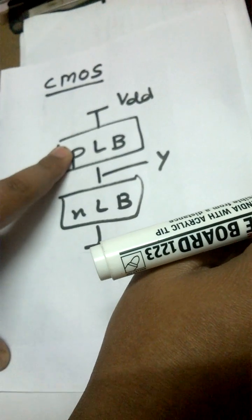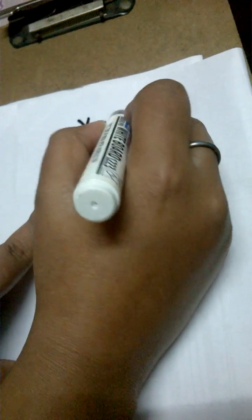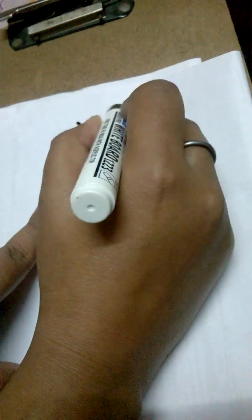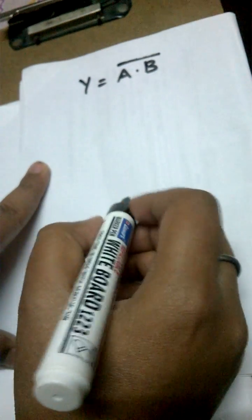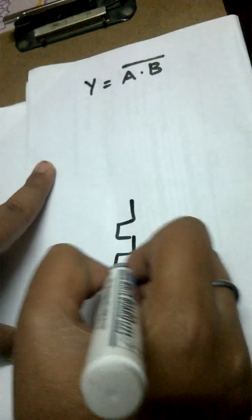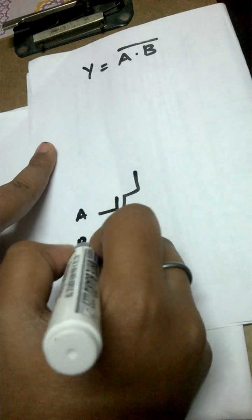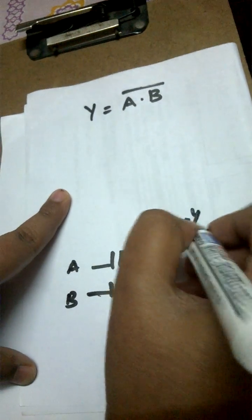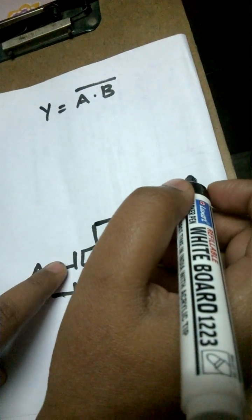Let's take the same example and draw the CMOS. I was having Y is equal to A dot B bar. Now I want to create the structure using CMOS device. The N logic block remains the same—that is, A and B will be connected in series using the NMOS devices. Now we can take Y from here.